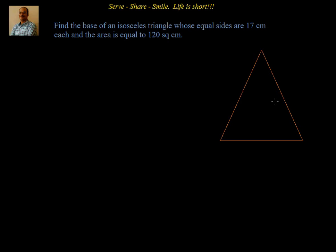So we have been given an isosceles triangle. We know that its equal sides are 17 centimeter each. We also know the area is equal to 120 square centimeter. We have to find out the remaining side, that's nothing but the base. So how to do this problem? Let's first write down whatever is given to us.